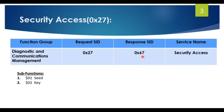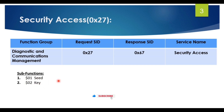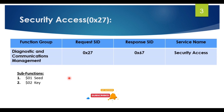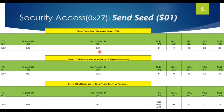The security access service ID is 0x27, and the response ID is 0x27 + 0x40 = 0x67. It is part of the diagnostic and communication management group. The sub-functions are 0x01 for seed request and 0x02 for send key.